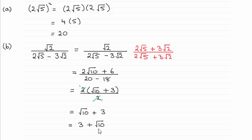You can see it ends up being 3 plus √10. Just to take you through this in case there were any problems, for the first one 2√5 all squared, 2√5 times 2√5, 2 times 2 is 4 and √5 times √5 is the root of 25 which is just 5, so 4 fives are 20.